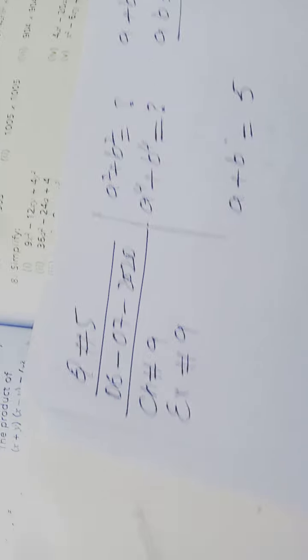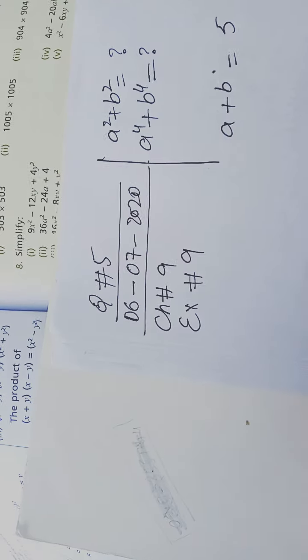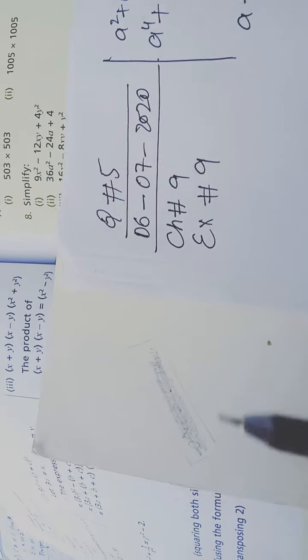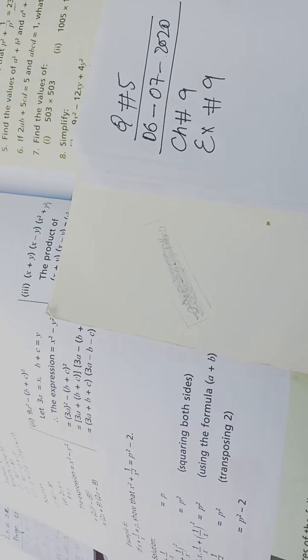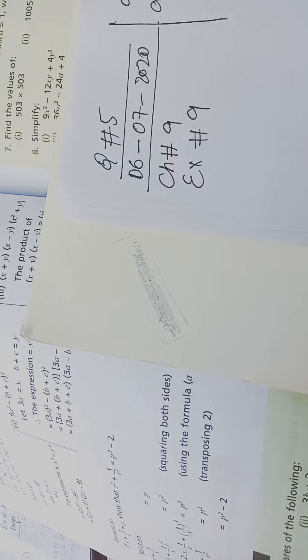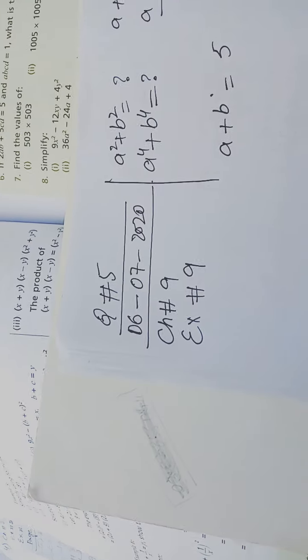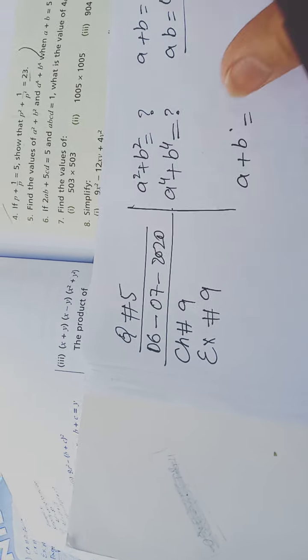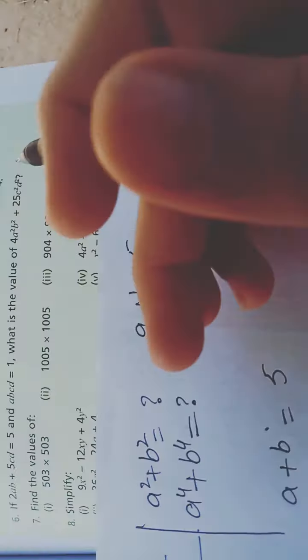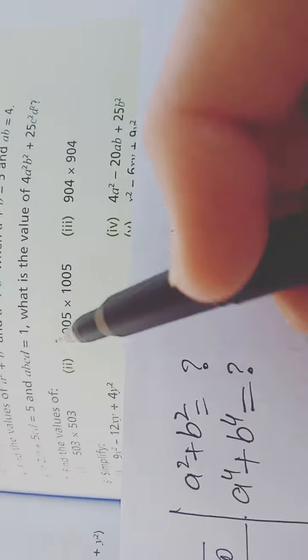Bismillah ar-Rahman ar-Rahim. Class 7th — last time we started Exercise 9, Chapter 9 on algebraic identities. We did up to question number 4, and today we are starting from question number 5.